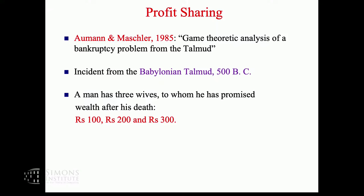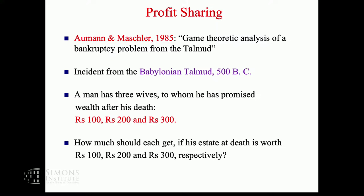When he passes away, if his estate is worth 100, 200, or 300 rupees, the question is how much should each wife get? The recommendation from the Babylonian Talmud turns out to be consistent with the nucleolus, which is a solution concept for profit sharing inferior to core. Core is the gold standard. If you don't share profit in a fair way, loving siblings can stop talking, friends can become enemies, entire business collaborations can collapse.